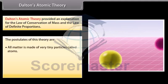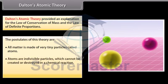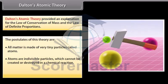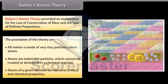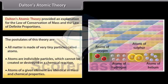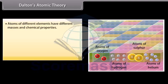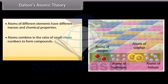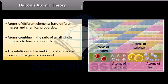1. All matter is made of very tiny particles called atoms. 2. Atoms are indivisible particles which cannot be created or destroyed in a chemical reaction. 3. Atoms of a given element are identical in mass and chemical properties. 4. Atoms of different elements have different masses and chemical properties. 5. Atoms combine in the ratio of small whole numbers to form compounds. 6. The relative number and kinds of atoms are constant in a given compound.